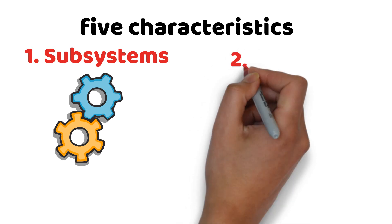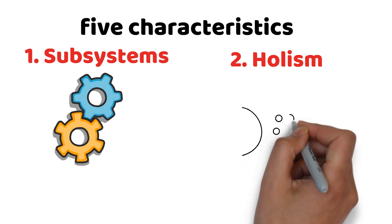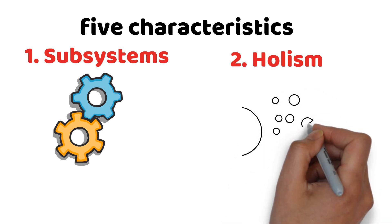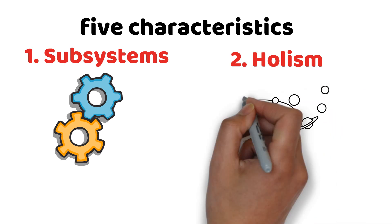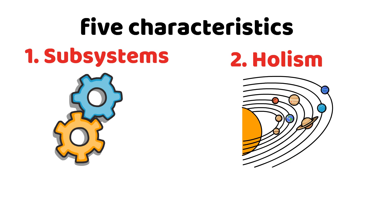The main five characteristics of the systems approach to management are: Number one, subsystems — each organization is a system made up of many interrelated subsystems. Number two, holism — each subsystem works together to make up a single whole system, and decisions made in any subsystem affect the entire system. Number three, synergy — the collective output of the whole system is greater than the sum of the output of its subsystems.